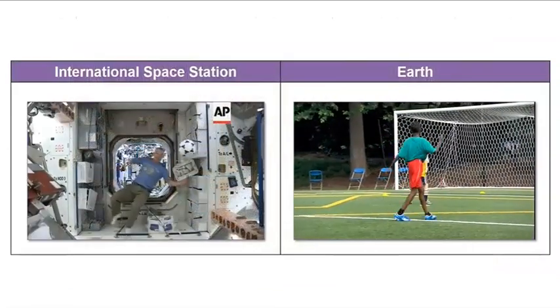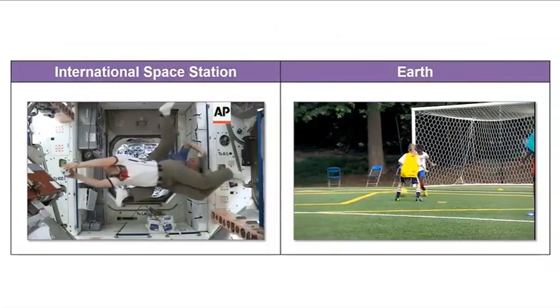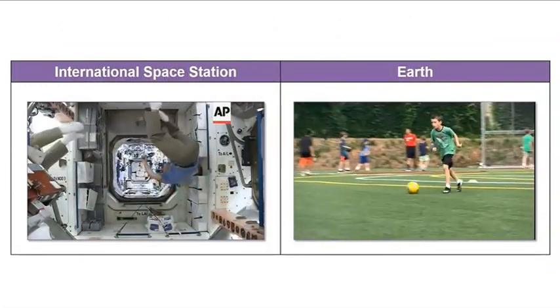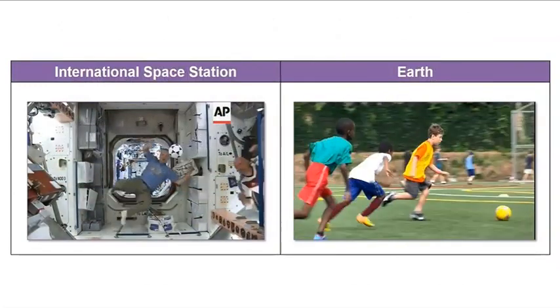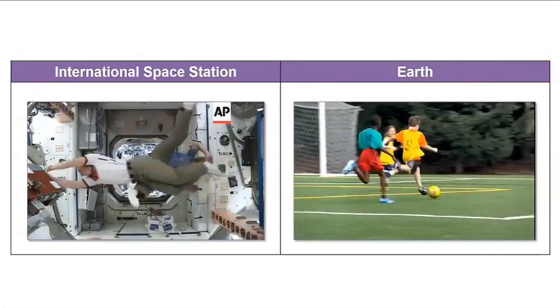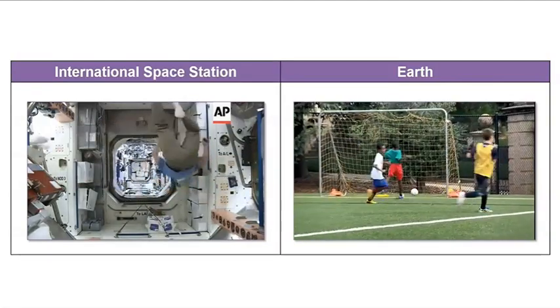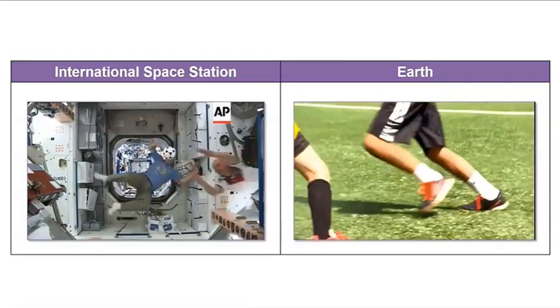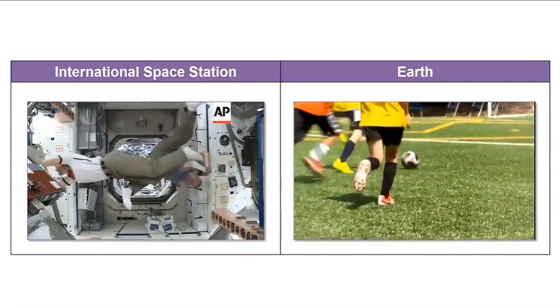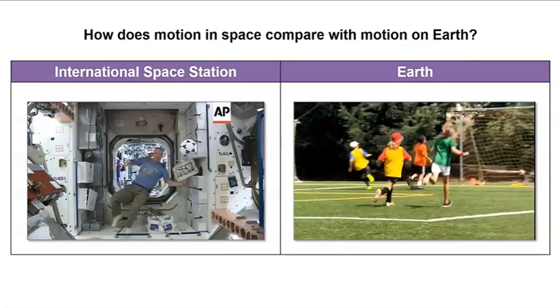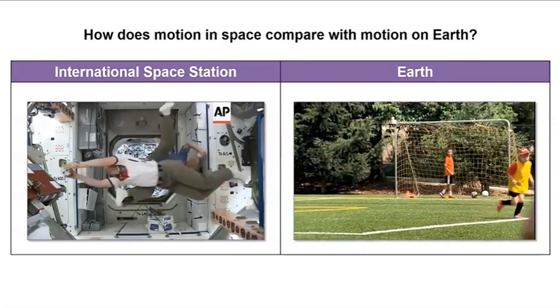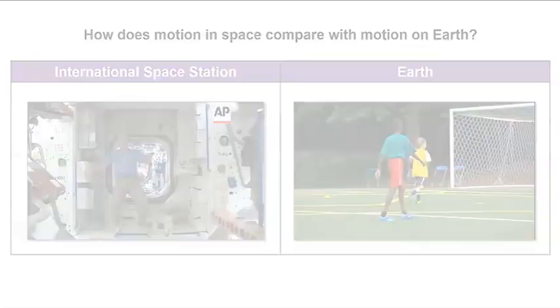Let's watch these video clips side-by-side. Focus on the motion of the soccer ball in each setting. How does motion in space compare with motion on earth? Let's draw a model to help us answer this question. What should we include in this model? I think we should show how the ball moves on earth as well as how the ball moves on the International Space Station.